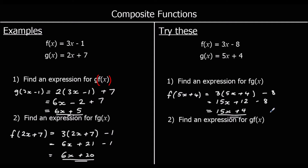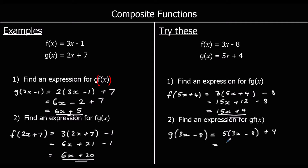And for gf of x — putting f into g — we do g of (3x minus 8), which is 5 times (3x minus 8) plus 4. That's 15x minus 40 plus 4, which is 15x minus 36.